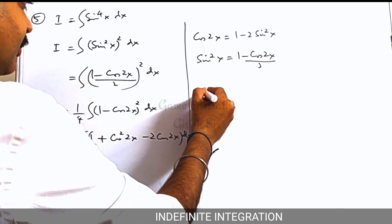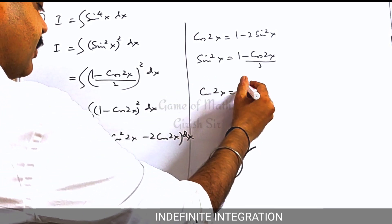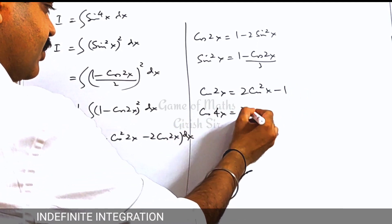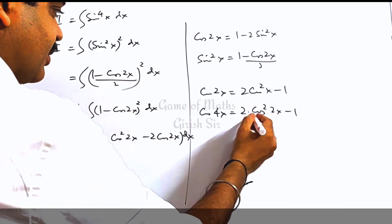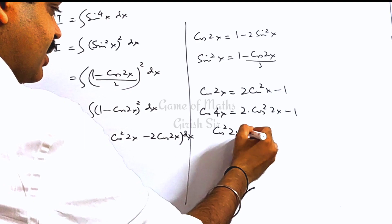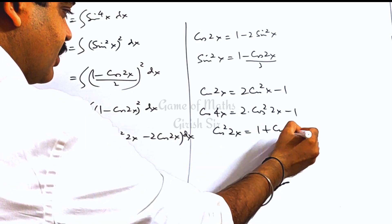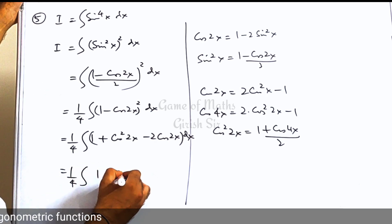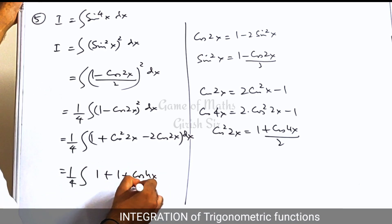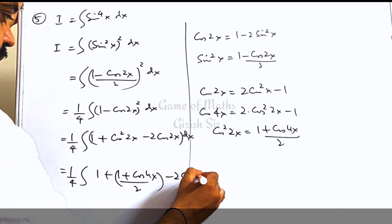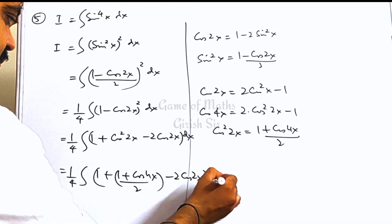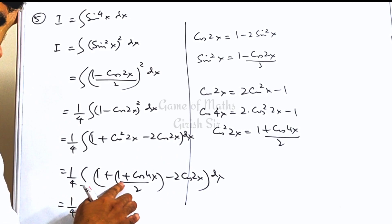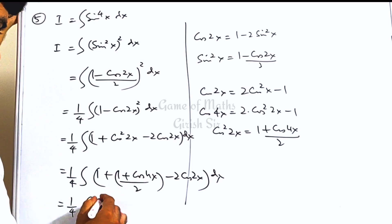Just as cos 2x = 2 cos squared x minus 1, similarly cos 4x = 2 cos squared 2x minus 1. From here you can get cos squared 2x = (1 plus cos 4x) divided by 2. Put it here. Now splitting the terms, 1 plus 1/2 can be written as 3/2.